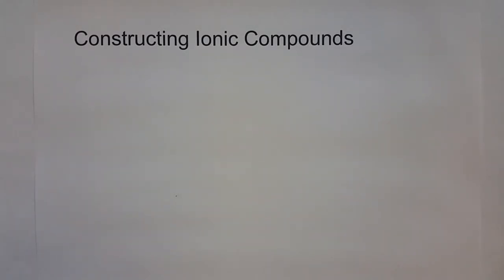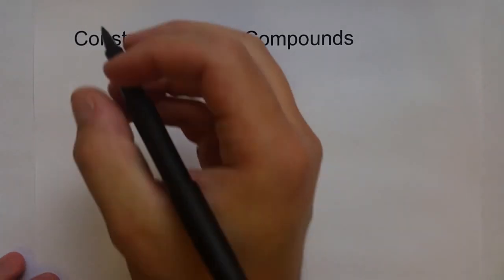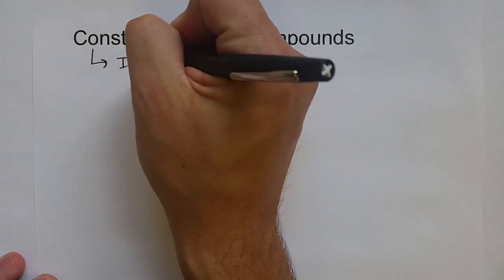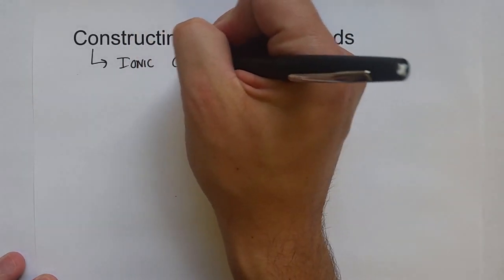So when we're trying to figure out the correct formula for ionic compounds, it's helpful to remember that ionic compounds are always going to be charge neutral.